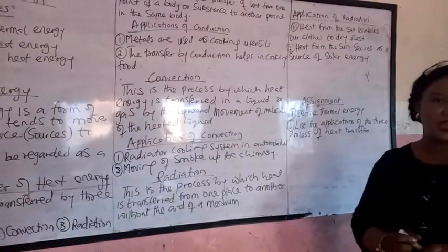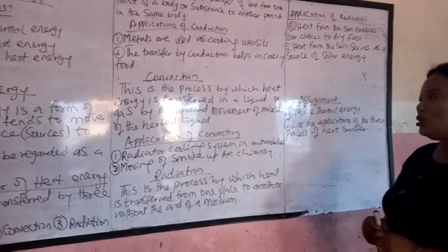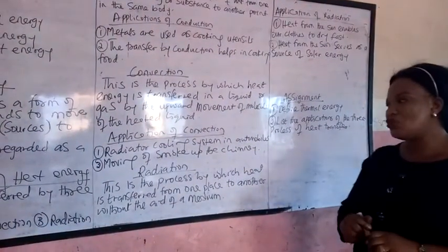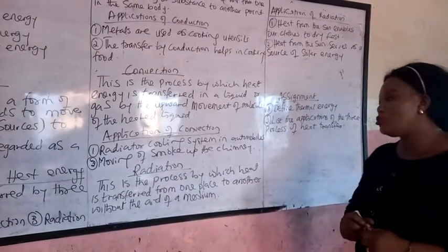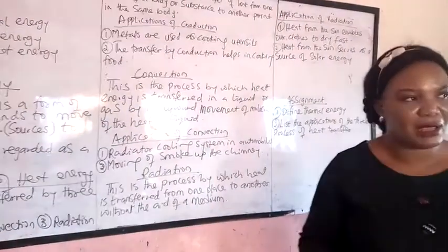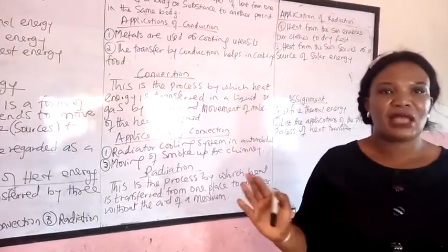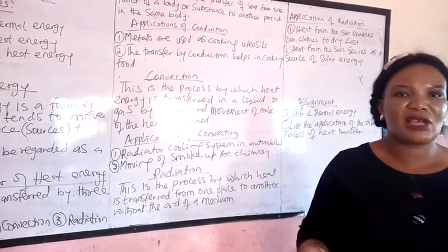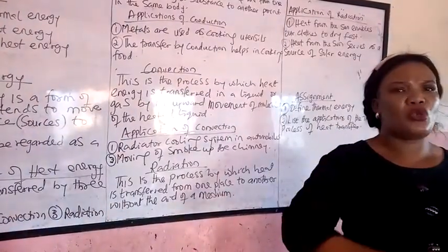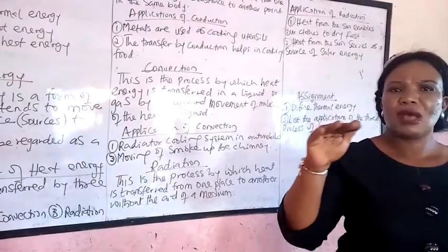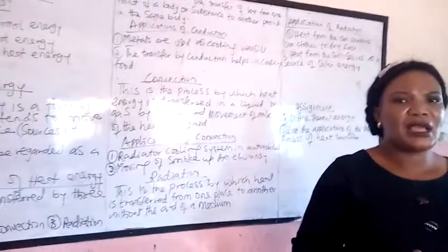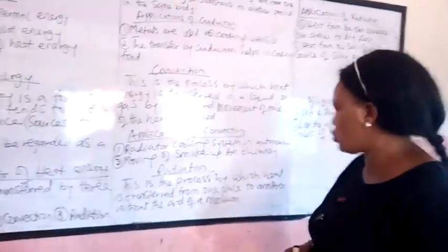What is radiation? Radiation is the process by which heat is transferred from one place to another without any medium or obstacle — nothing is needed to carry it. The heat just moves on its own, just like the heat that comes down to us from the sun does not need any aid to reach us. That is heat transferred by radiation.